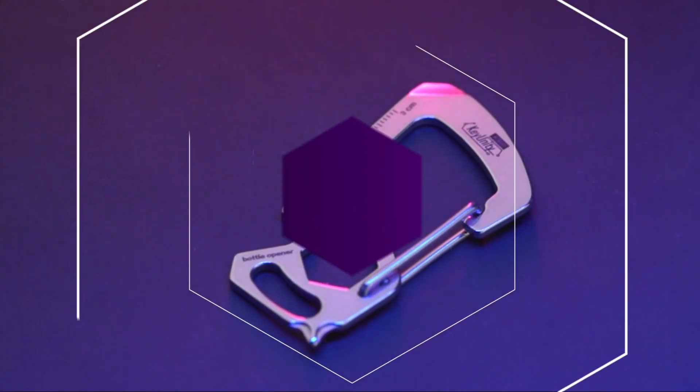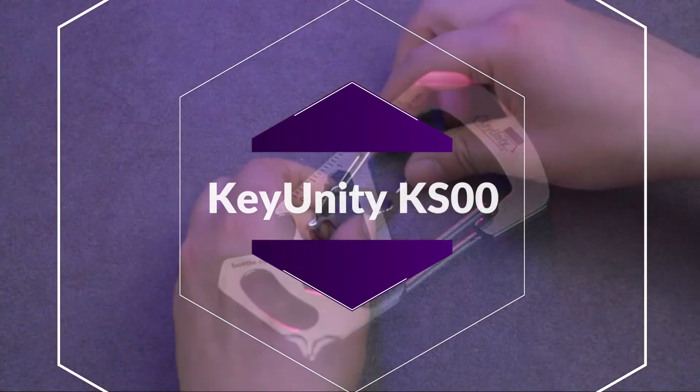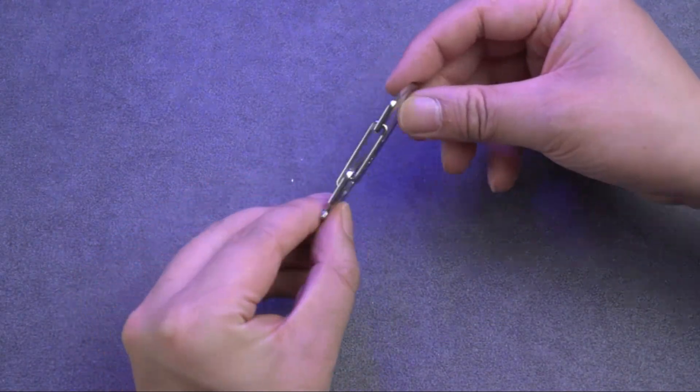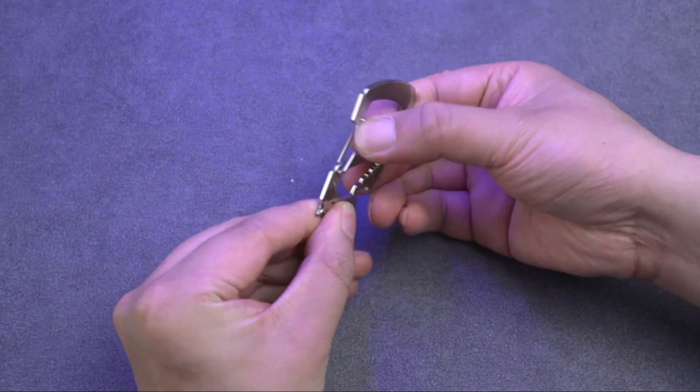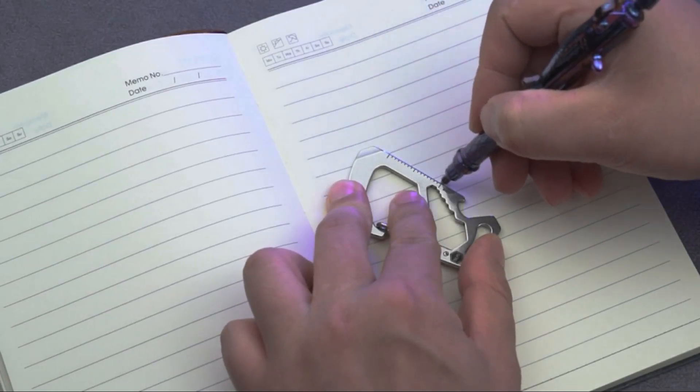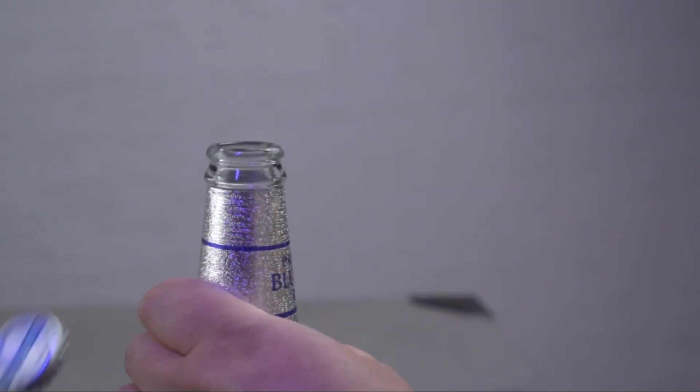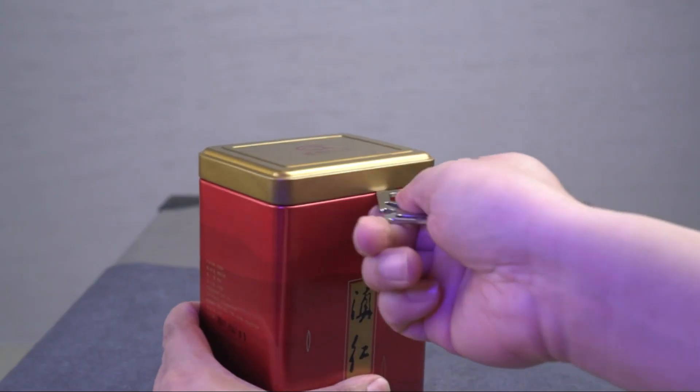The compact multi-tool keychain packs seven functions into a carabiner including flathead and slotted screwdriver, seven sizes hex wrenches, carabiner, bottle opener, pry bar, scraper, key loop, and measuring ruler. CNC machined from full 420 stainless steel, non-corrosive and anti-rust with superior craftsmanship.